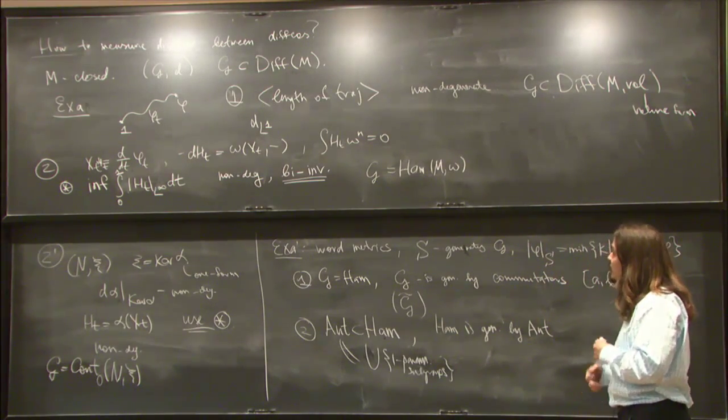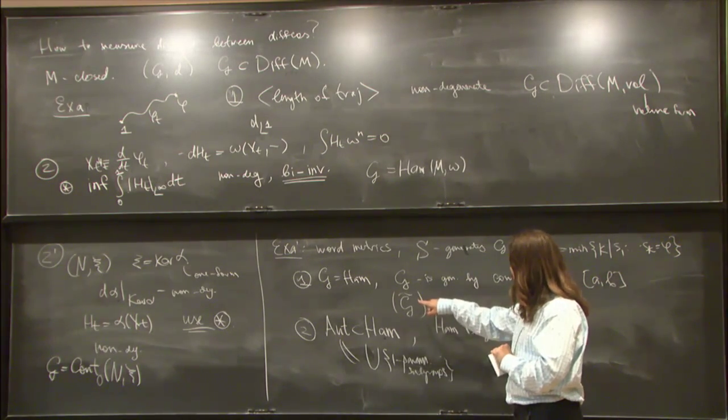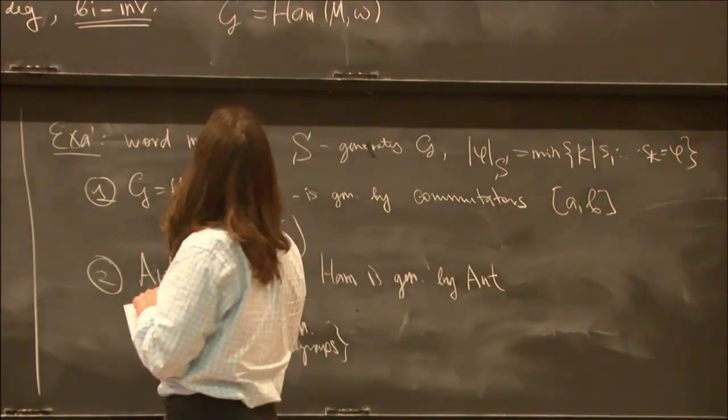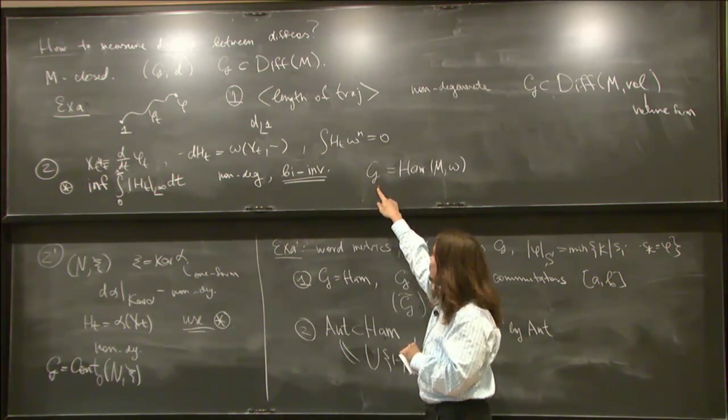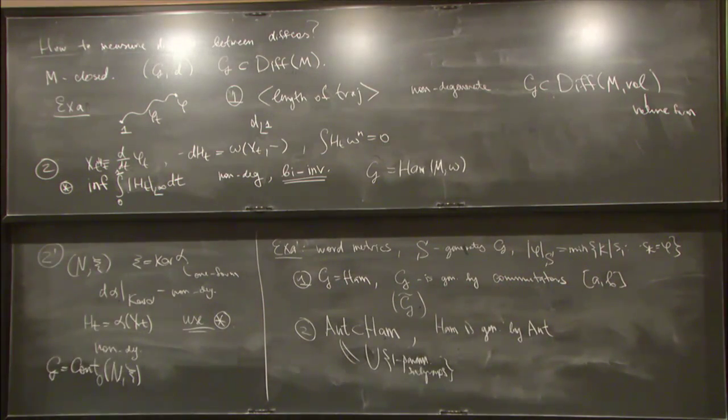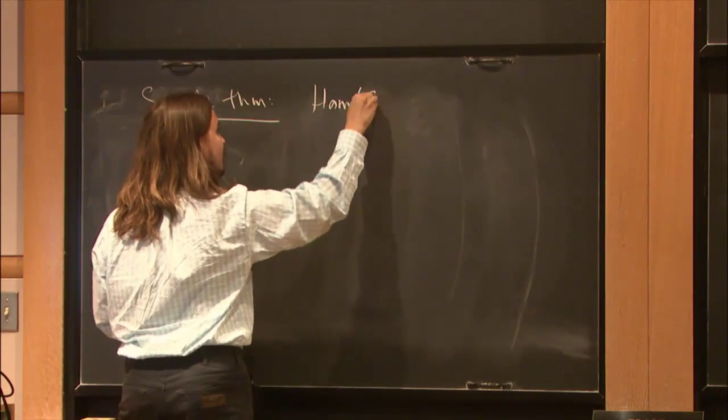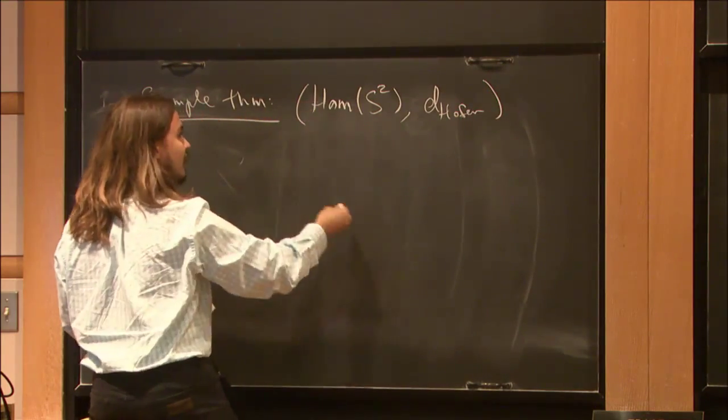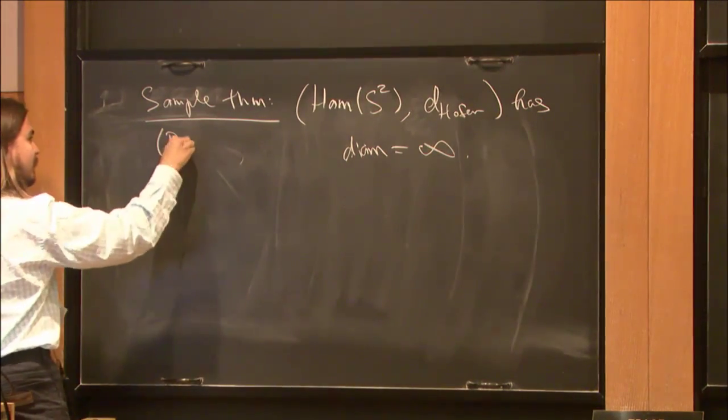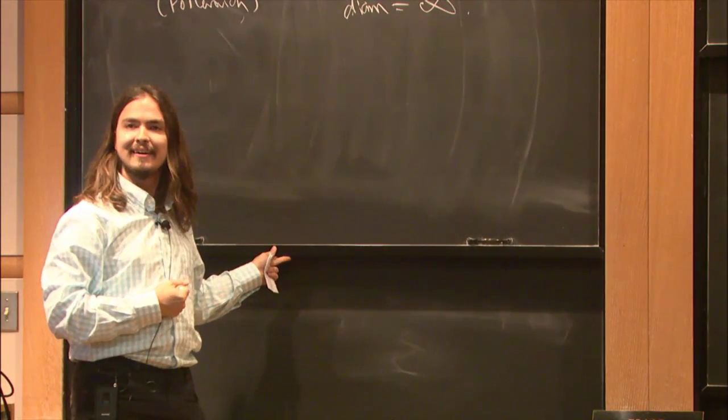Now I would like to give some examples of theorems and questions one can ask about these things. For example, one can always ask whether the diameter of a metric space is infinite or not. For the L1 metric, the diameter is always infinite. For S2, the diameter here is infinite. If one takes the universal cover here, the diameter is infinite. But when one doesn't, it's not really known in full generality. Here is a sample theorem: Ham of S2 with Hofer's metric has infinite diameter. This is the theorem of Polterovic from the late 90s.